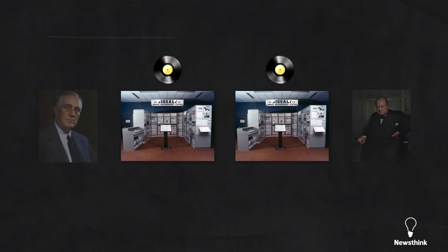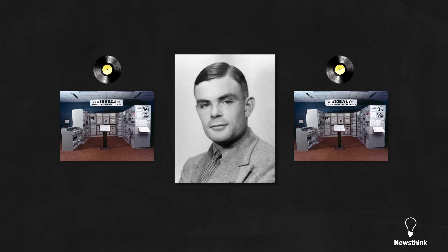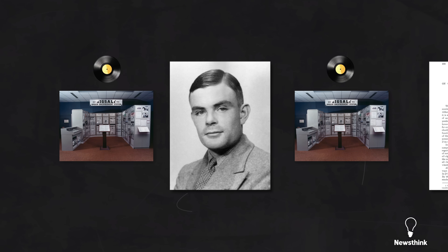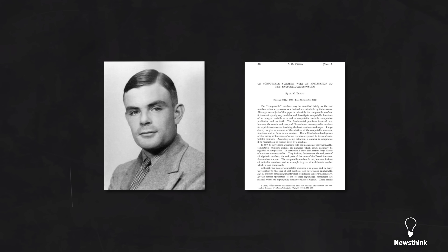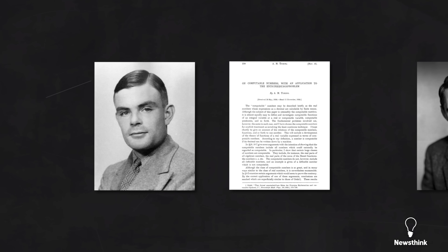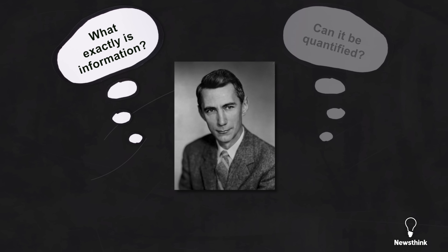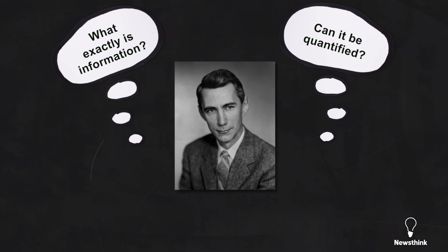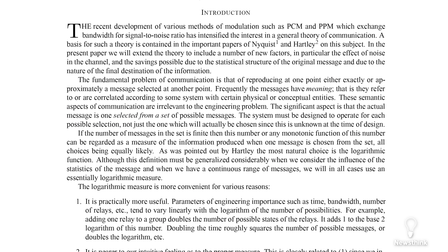That fact was confirmed by Britain's top cryptographer Alan Turing during a visit to the U.S. Turing had proposed the idea of a universal machine — one that could in theory solve any mathematical problem that could be described algorithmically. Shannon realized that for such a machine to reach its potential, fundamental questions had to be answered: What exactly is information? Can it be quantified? Those questions led to his groundbreaking 1948 paper on information theory.